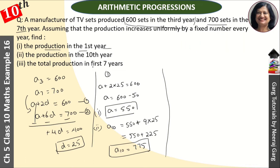Now the third part: the total production in the first seven years. So this is called S₇. The formula for Sₙ is n/2[2a + (n-1)d]. So this will be 7/2 times [2(550) + (7-1)(25)].